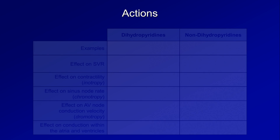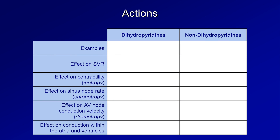When discussing the actions of calcium channel blockers, I'm going to include the non-antiarrhythmic dihydropyridines because their names, classification, and actions all frequently get confused and muddled together. So first, the dihydropyridines. Examples of these drugs include amlodipine, felodipine, nifedipine, and nicardipine.